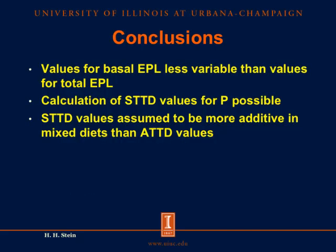In conclusion, values for basal endogenous losses are much less variable than values for total endogenous losses of phosphorus, making it possible to calculate standardized total tract digestibility of phosphorus in different feed ingredients. These values are believed to be additive in mixed diets and more accurate than apparent total tract digestibility values.